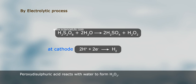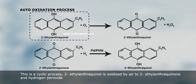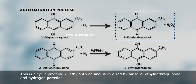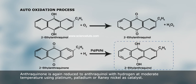Peroxydisulfuric acid then reacts with water to form H₂O₂: H₂S₂O₈ + 2H₂O gives 2H₂SO₄ + H₂O₂. At the cathode, 2H⁺ + 2e⁻ gives H₂. In the auto-oxidation process, 2-ethylanthraquinol is oxidized by air to 2-ethylanthraquinone and hydrogen peroxide. The anthraquinone is again reduced at moderate temperature using platinum, palladium, or Raney nickel as catalyst.